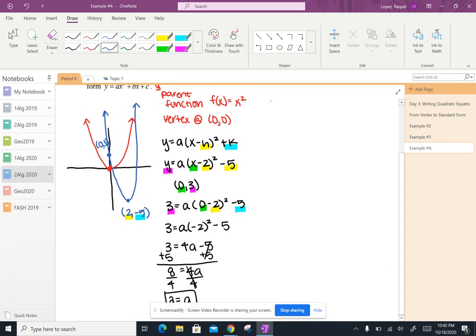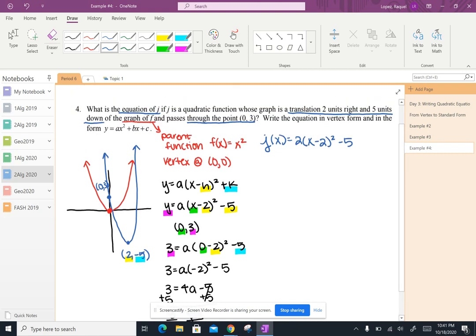So the vertex form of my j graph is j of x equals two x minus two, sorry, my pen is being weird, two x minus two squared minus five. So here is my vertex form.